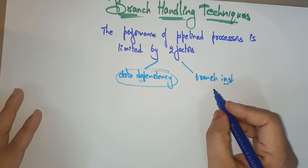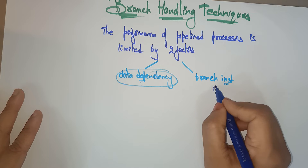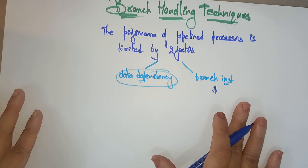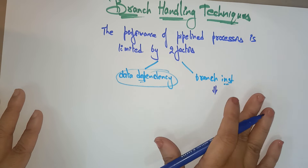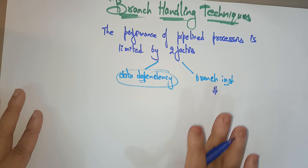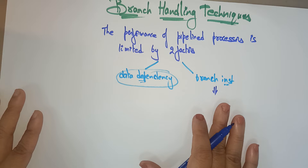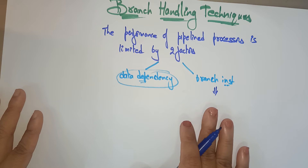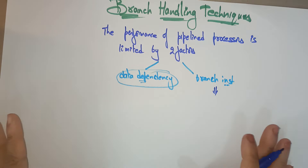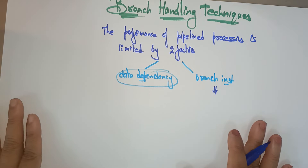Now in this video, I want to explain how to increase the performance of a pipeline processor in the branch instructions — what factors we need to consider. That is what I am going to explain in this video.